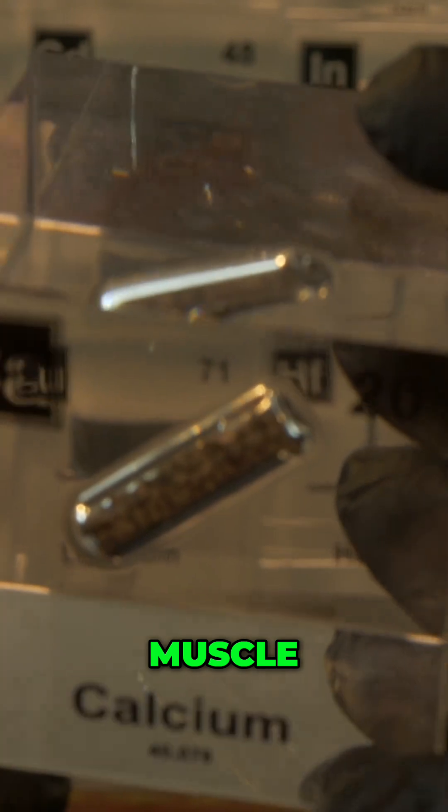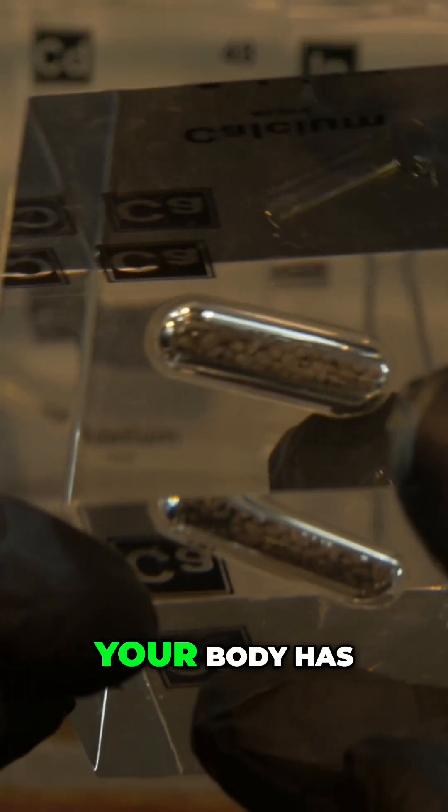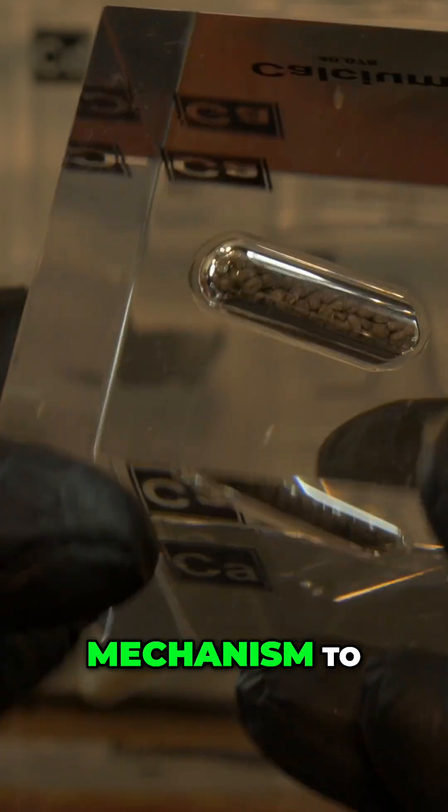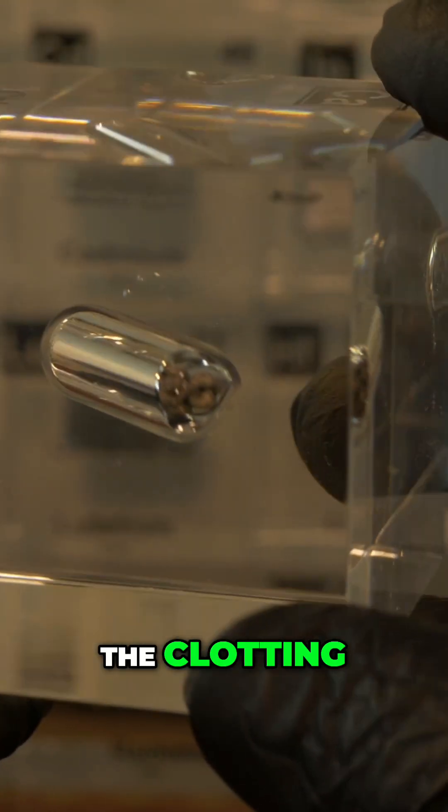When you get a cut and it bleeds, your body has a clotting mechanism to stop the bleeding. Calcium is one of those critical players in the clotting cascade.